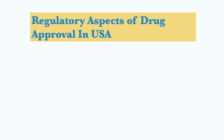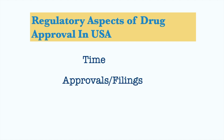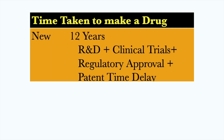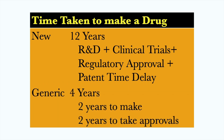We are going to discuss the US regulatory framework in three stages: time, approval and filing process, and inspection. Let's first talk about the time taken to make a drug in the US. For a new drug in the US, you will need 12 years — which is basically the sum of R&D plus clinical trials, plus regulatory approval, plus patent time delay. If you want to manufacture a generic drug, then you will need 4 years — 2 years to make it and 2 years to get approval. The difference between 12 and 4 years — new versus generic — gives a very huge business opportunity.